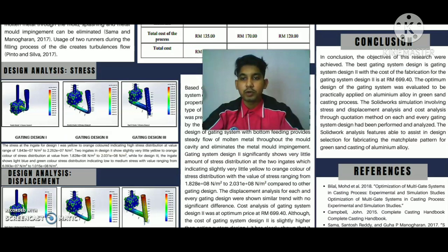In conclusion, the objective of this research was achieved. The best gating system design is gating system design 2, with the cost of fabrication at 699 ringgit and 40 cents. The optimum design of the gating system was evaluated to be practically applied on aluminium alloy in the green sand casting process.